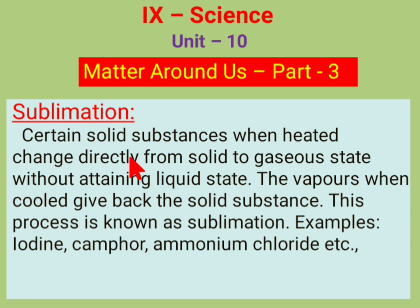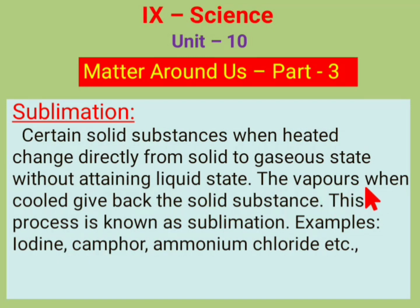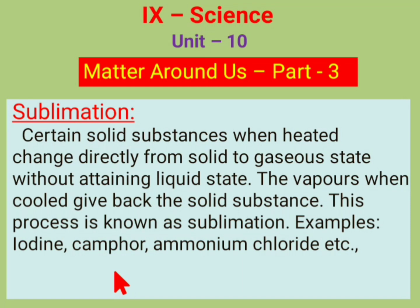Sublimation is the process where a solid substance, when heated, changes directly from solid to gaseous state without attaining a liquid state. The vapors, when cooled, change back into solid. This process is known as sublimation. Examples: iodine, camphor, ammonium chloride, etc.